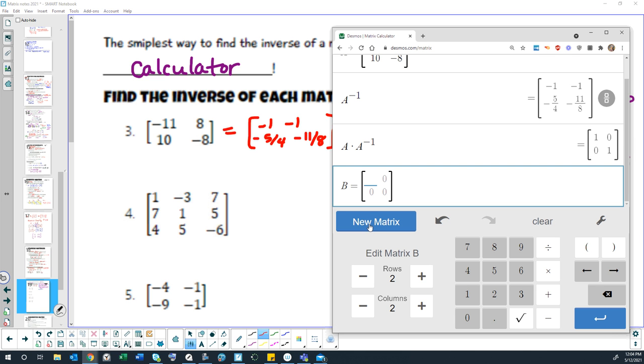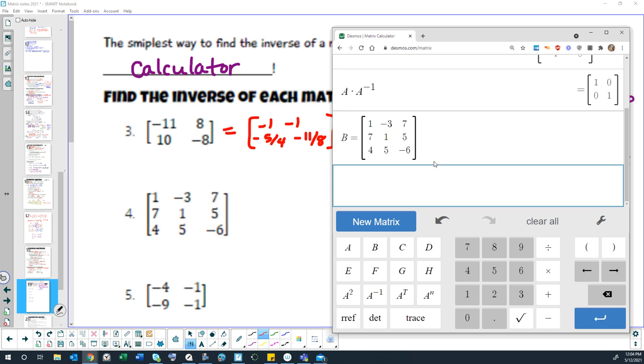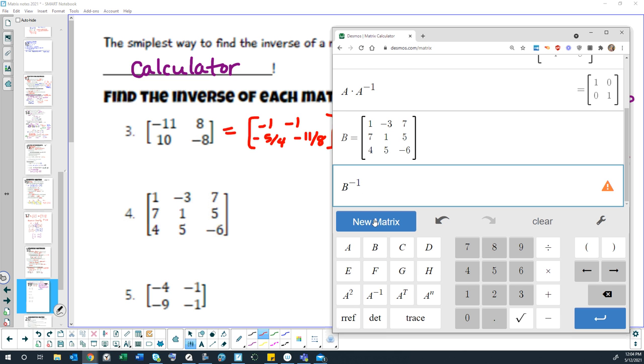Let's go to our next problem here, number 4. I'm just going to choose a new matrix. This one's a 3x3, so I'm going to increase the dimensions of the matrix and type those numbers in: 1, negative 3, 7, 7, 1, 5, 4, 5, negative 6. Enter that one so that I know that that's now matrix B. So now I can go down to B and choose my A to the negative 1. Even though it's an A, if I select the B first and then do that button, that just tells it to find the inverse.